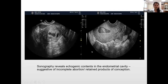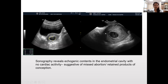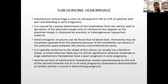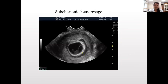This sonographic image shows echogenic contents in the endometrial cavity, suggestive of incomplete abortion or retained products of conception. This image shows echogenic contents in the endometrial cavity with no cardiac activity, suggestive of missed abortion or retained products of conception. Subchorionic hemorrhage is a partial detachment of trophoblast from the uterine wall, seen on ultrasound as a crescent-shaped anechoic or heterogeneous hypoechoic material at the placental margin; small echogenic structures can be found due to clots. It usually resolves, as seen in this image.